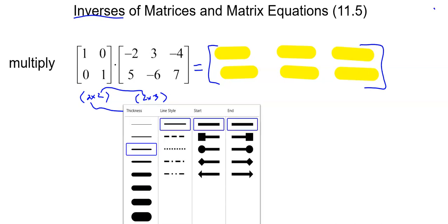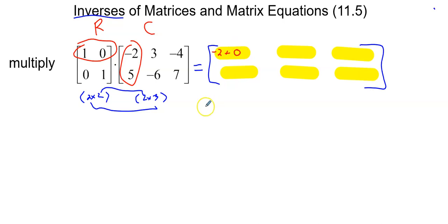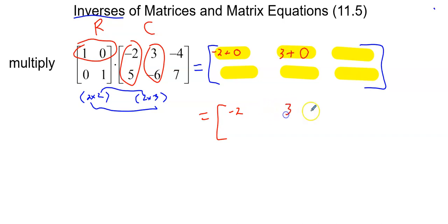We're going to multiply row by column — always the row in the first matrix, always the column in the second matrix. For the top left, I do the top row and the left column: 1 times negative 2 is negative 2, plus 0 times 5 is 0, so that's negative 2. Top row, middle column: 1 times 3 plus 0 times anything is 0, so we get 3. Last column: 1 times negative 4 is negative 4, plus 0 times 7 is 0, so we get negative 4.